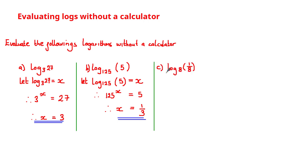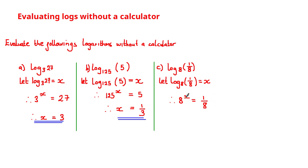We need to evaluate log base 8 of 1 over 8. Letting this value equal x and using the anti-clockwise trick, we get 8 raised to the power of x is equal to 1 over 8. If x equals negative 1, we get 8 raised to the power of negative 1, which equals 1 over 8. Therefore x is equal to negative 1.